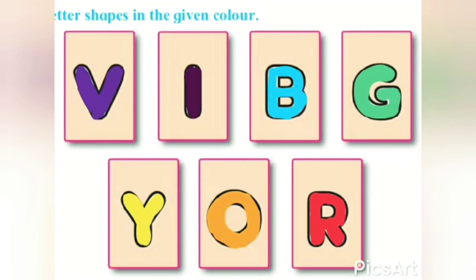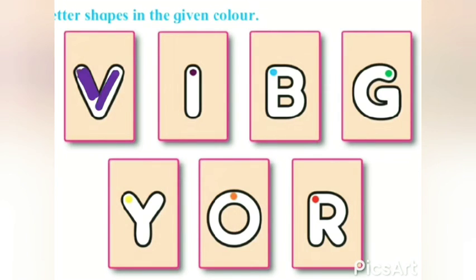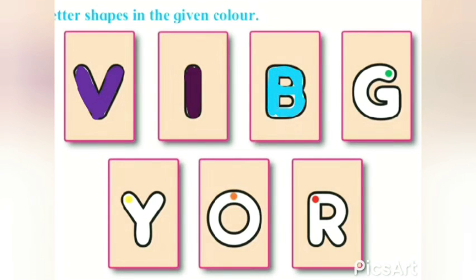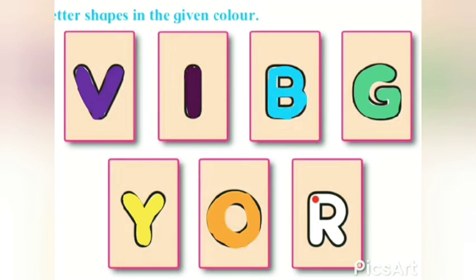Let's again color the letters. Violet to V. Indigo to I. Blue color to B. Green color to G. Yellow for Y. Orange for O. Red for R.